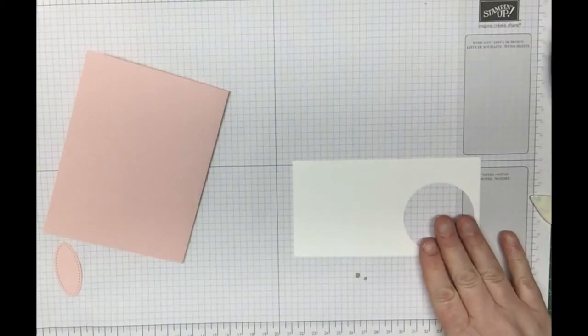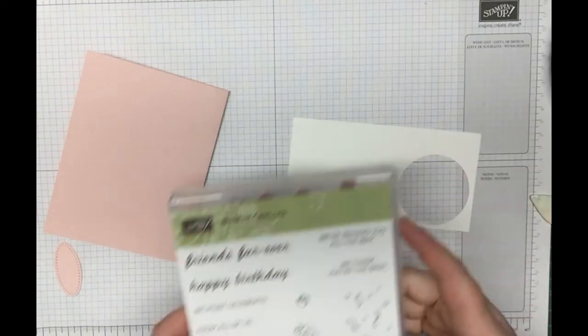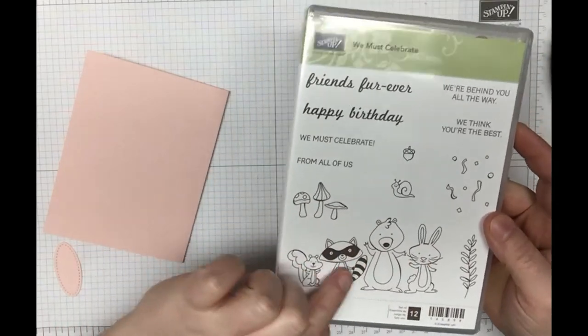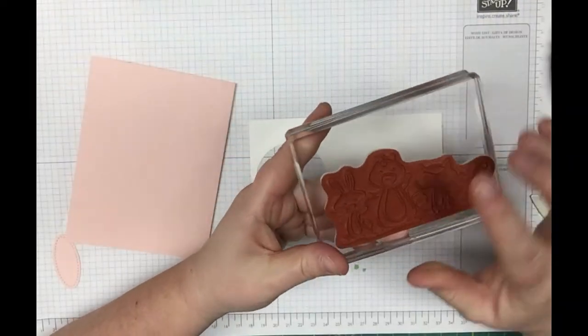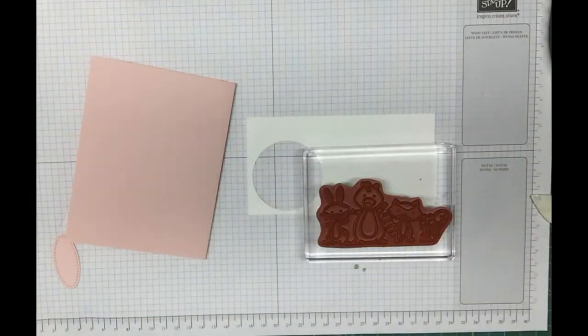We're going to use a piece of Whisper White. I'm just using a scrap piece here. We're going to use the We Must Celebrate stamp set. You're going to take the animals out of here. All I want to do is stamp out this bunny. I don't want to stamp out the rest of them.